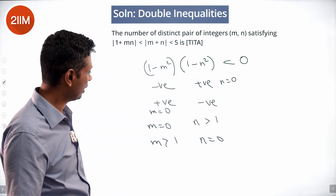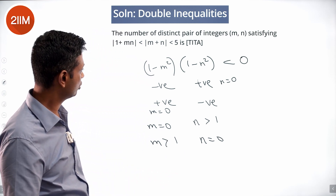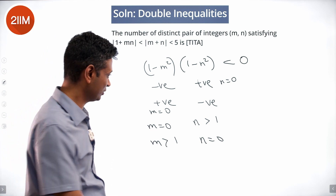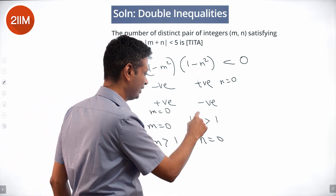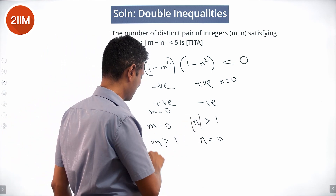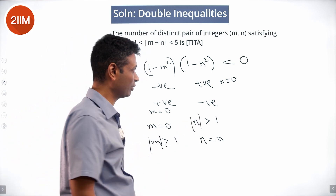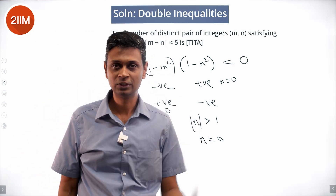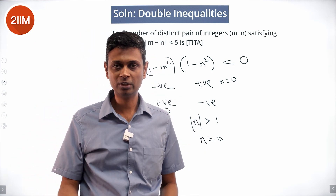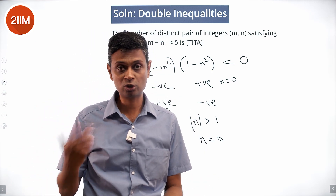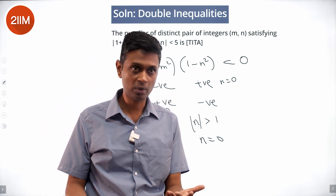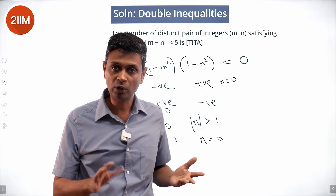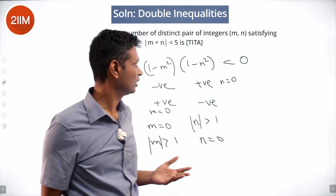Now, this question involves |n| > 1 and |m| > 1 — we're talking about absolute values, so both +2 and −2 work, both +1 and −1 do not work, but ±2, ±3, ±4 will work.